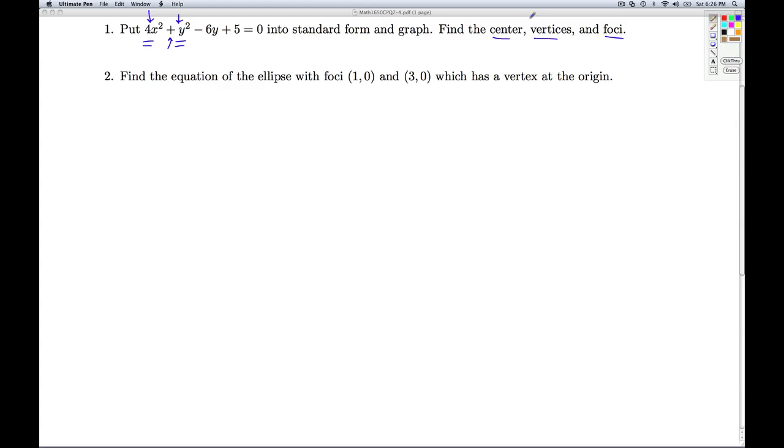And the fact that we're asking for center, vertices, and foci, well, that's another dead giveaway we got ourselves an ellipse. Alright, so we look at the equation: 4x squared plus y squared minus 6y plus 5 equals 0.